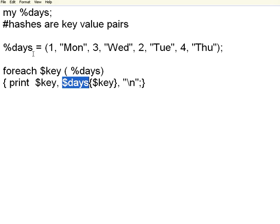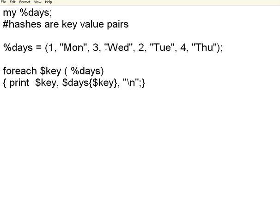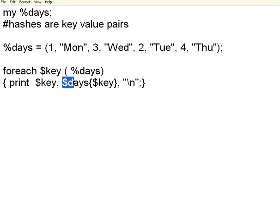You need to use the dollar symbol on the same hash name, and then within curly braces, the dollar key. This means if the key is 1, get the corresponding value for that key 1. So the key is 1, the corresponding value is Monday. If the key is 2, the corresponding value is Tuesday. The syntax to get a value within the hash table is to give the key directly, rather than an index like third or fourth.